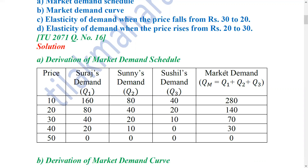From 10 rupees, Suresh's demand is 160 units, Sony's demand is 80, and Sushil's demand is 40. At Rs. 10, we add 160 plus 80 plus 40, which equals 280 units. So the market demand is 280 units.